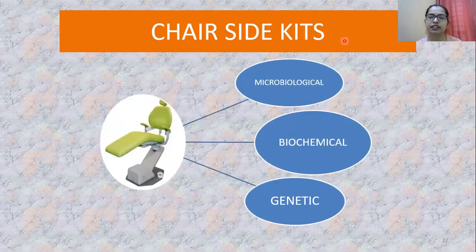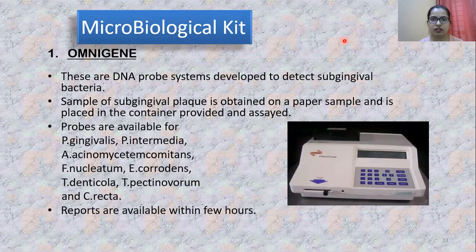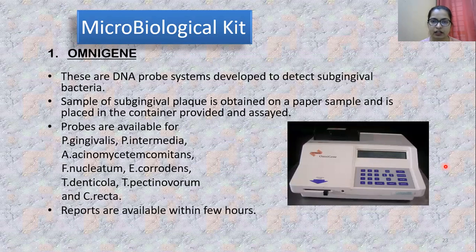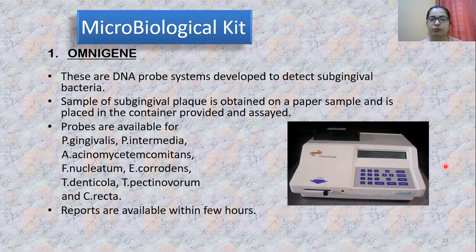Coming to chair-side kits, we have microbiological, biochemical and genetic test kits. In microbiological test kits, we have Omnigene, a DNA probe system that helps in determining subgingival bacteria. A subgingival sample is obtained on a paper point and placed in a container to determine the type of organism present.